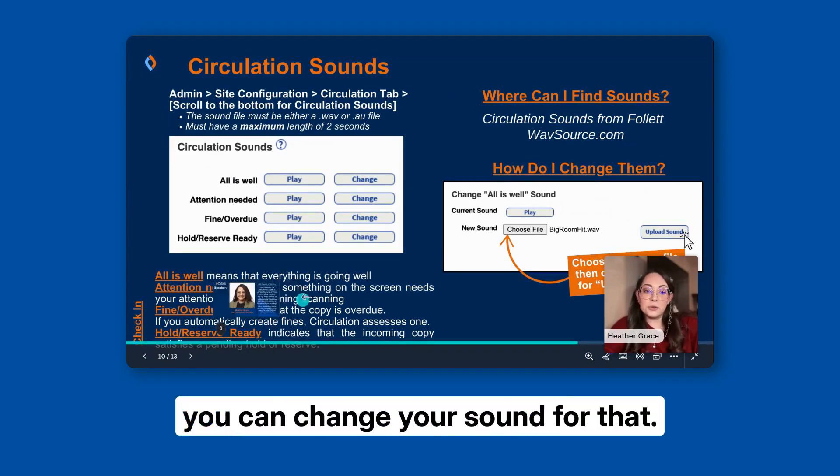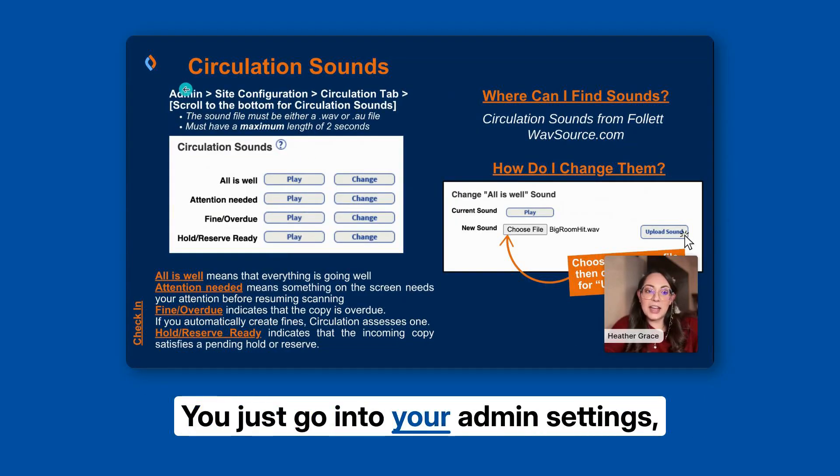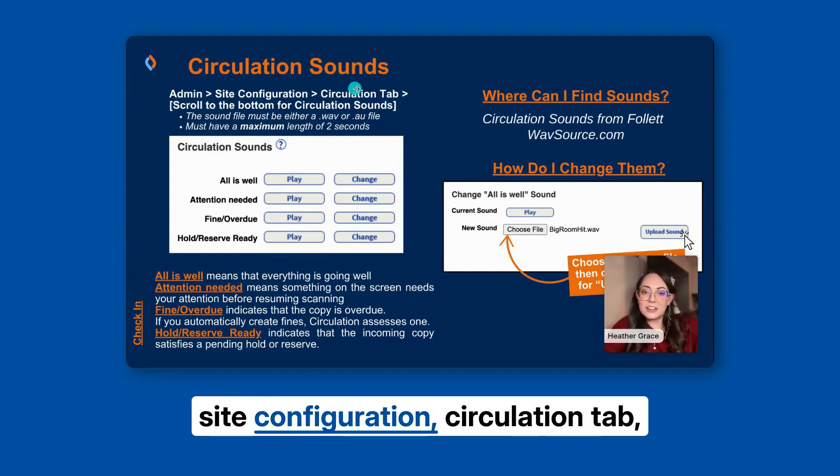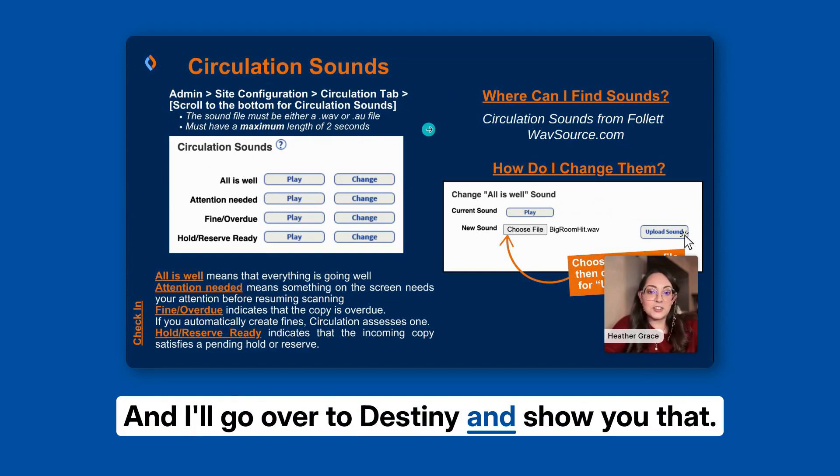And if you have a hold, you can change your sound for that. So it's really easy to go and change. You just go into your admin settings, site configuration, circulation tab, and then scroll for the circulation sounds. And I'll go over to Destiny and show you that.